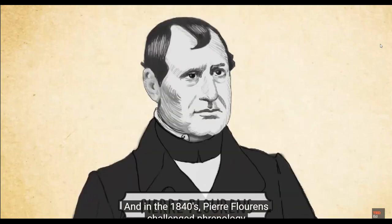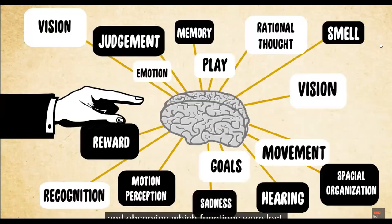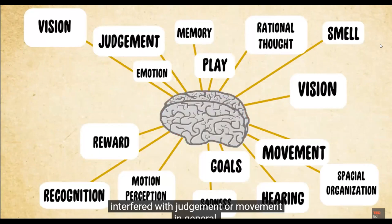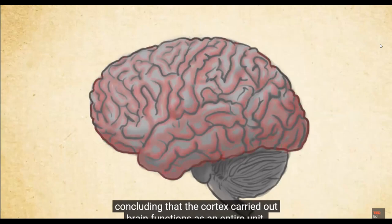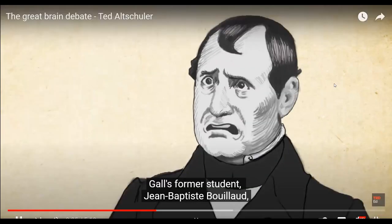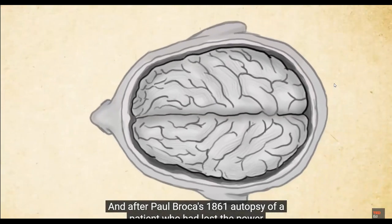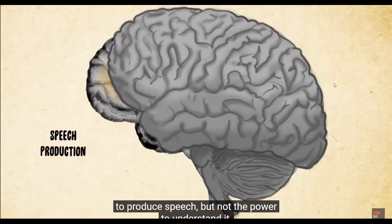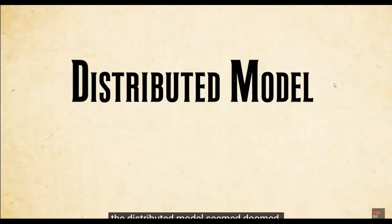Gall went on to establish phrenology, which held that strong mental faculties corresponded to highly developed brain regions observable as bumps in the skull. However, Gall never scientifically tested whether his individual brain maps applied to all people. In the 1840s, Pierre Florenz challenged phrenology by selectively destroying parts of animal brains and observing which functions were lost. Florenz found that damaging the cortex interfered with judgment or movement generally, but failed to identify any region for one specific function — concluding the cortex worked as an entire unit.